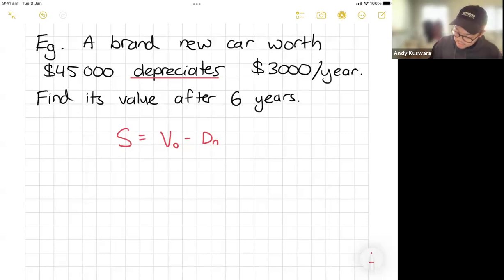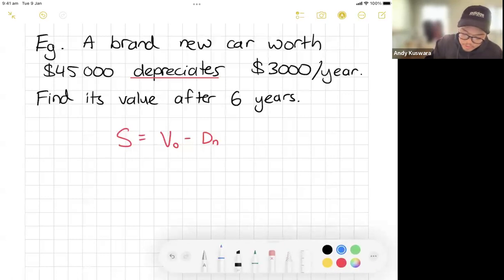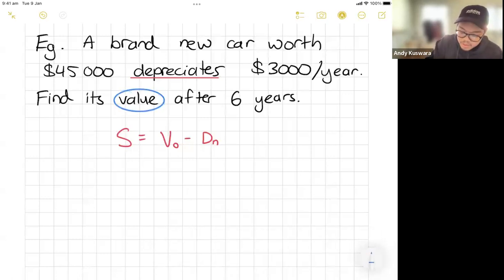So I'm going to highlight a couple of things here. So you can see if I want to find its value, that's me looking for the salvage value. If I'm talking about the six, that's me talking about the number of time periods. Seeing that I depreciate $3,000 a year, that's going to be my capital D. And then my initial value, that's how much it was originally. That's my V0.